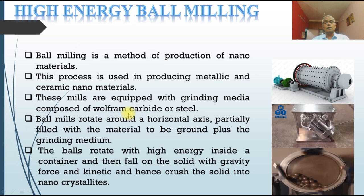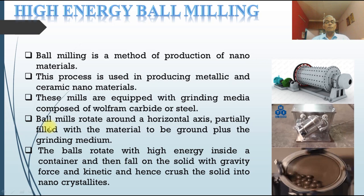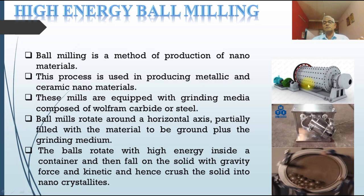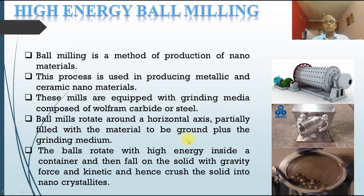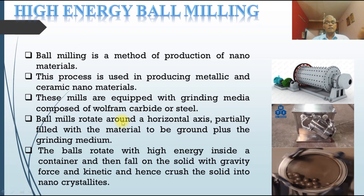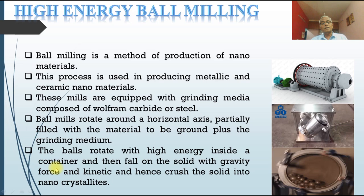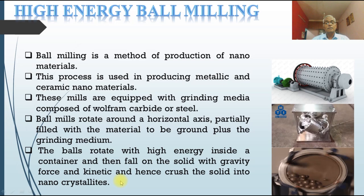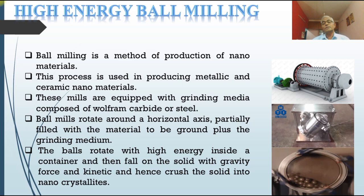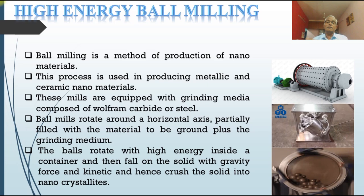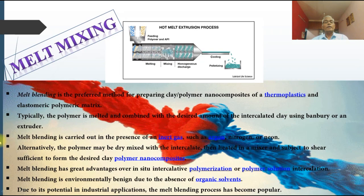A carbide or steel spherical ball is used. The ball mill rotates around a horizontal axis with the material to be ground plus the grinding medium. The balls rotate with high energy inside the container and fall on the solid with gravity and kinetic force, crushing the solid into nanocrystals. However, there is a limitation in this method: we cannot reach beyond a certain size because of constraints in the grinding process.